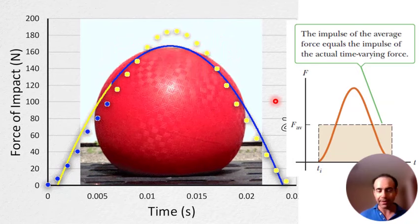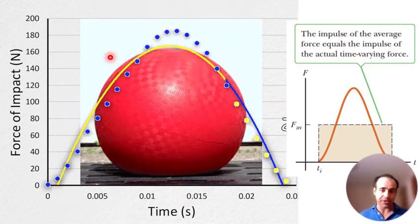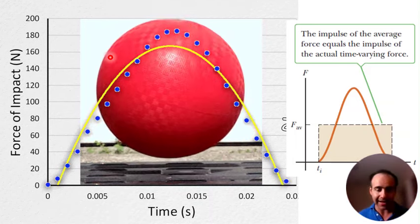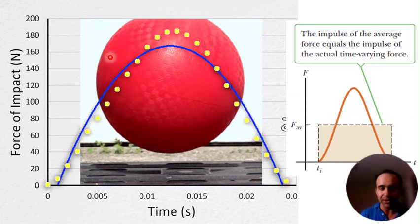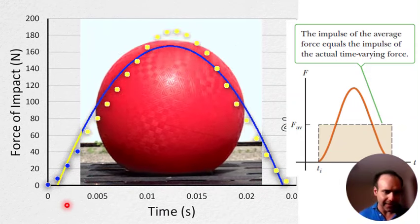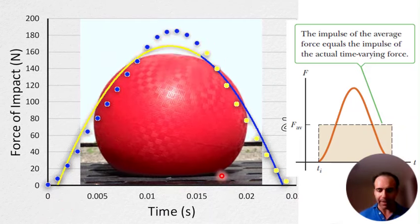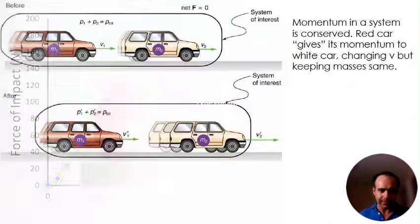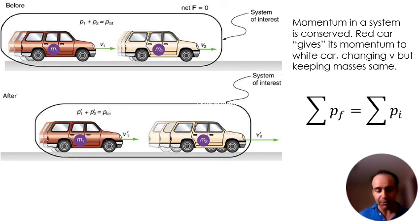Don't be intimidated by these graphs — they're just showing you on a macroscopic level what's going on. Sometimes, like with a baseball hitting a bat, it would be a very microscopic situation.